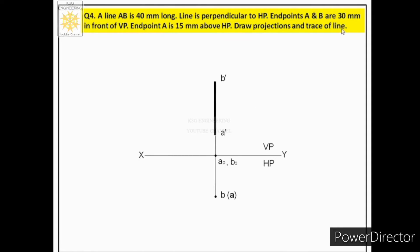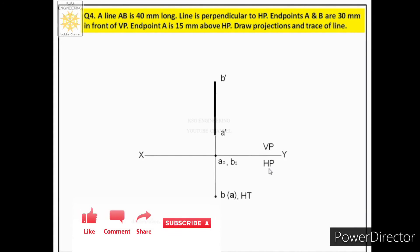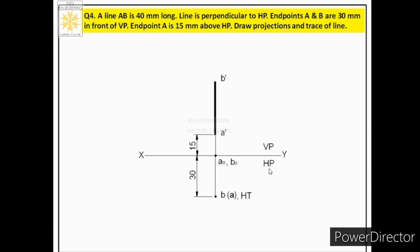Next we find the trace of the line. Since the line is perpendicular to HP, we get a horizontal trace HT. As seen in the pictorial view, when the perpendicular line is extended it intersects the plane at its top view, so the top view itself acts as the horizontal trace — marked as capital HT. Finally, we place dimensions: 15 mm for A above HP, 30 mm for the distance from VP, and the true length of the line, following chain dimensioning rules. The fourth case is now complete.